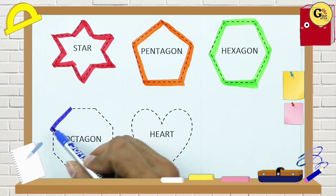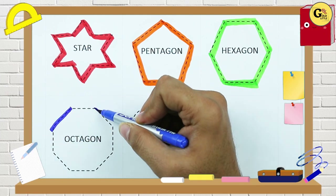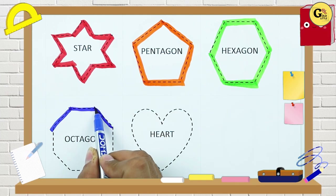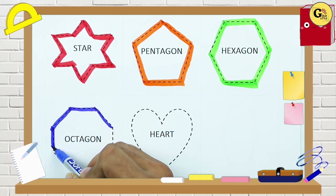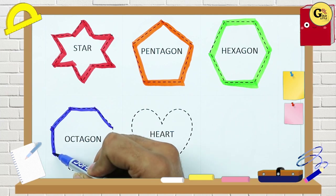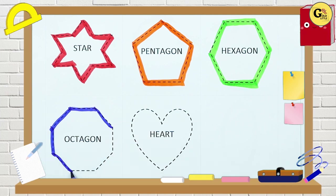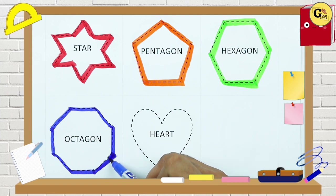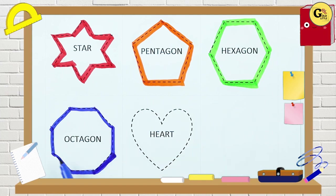Octagon — one line, two line, three line, four, five, six, seven, eight — eight lines means octagon.